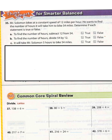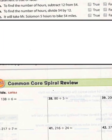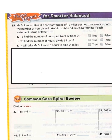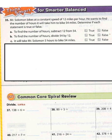All right, guys, so we're going to continue moving on. This is page 558. I'm going to keep working out some of the odd ones. Mr. Sulton bikes at a constant speed of 12 miles per hour. He wants to find the number of hours it will take him to bike 54 miles and determine if each statement is true or false.